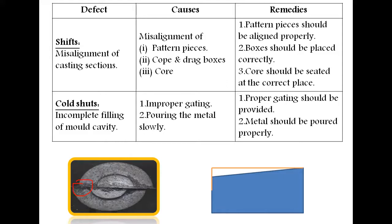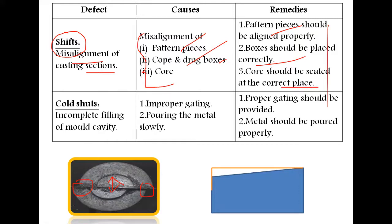Shift refers to misalignment of casting sections — the cope and drag are not even. This issue forms when pattern pieces and the drag box are misaligned. To avoid this, use double pins, ensure pattern pieces are aligned properly using a split pattern, boxes should be placed correctly with dowel pins, and the core should be seated in the correct core print position.